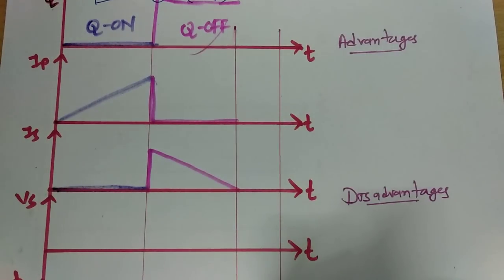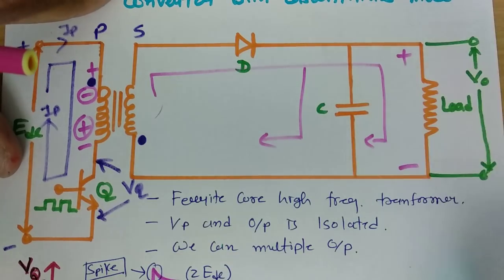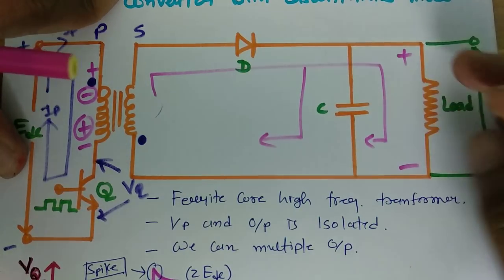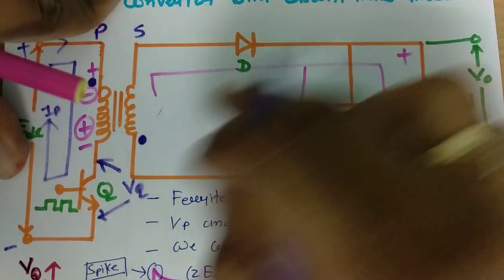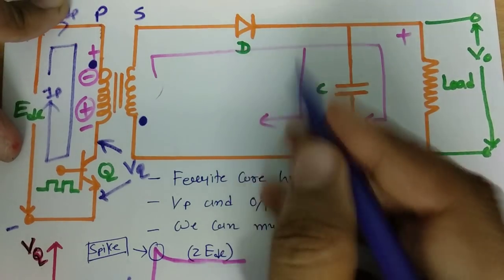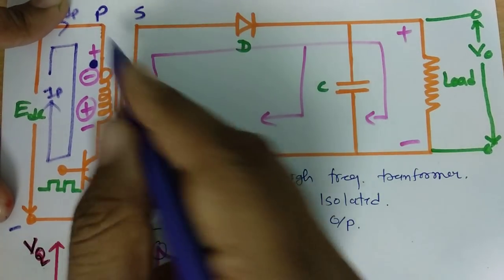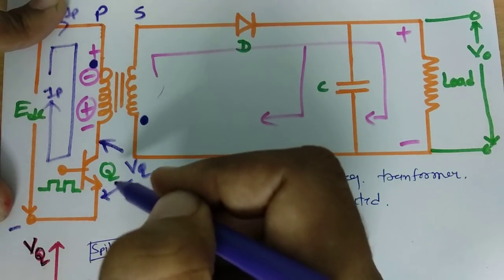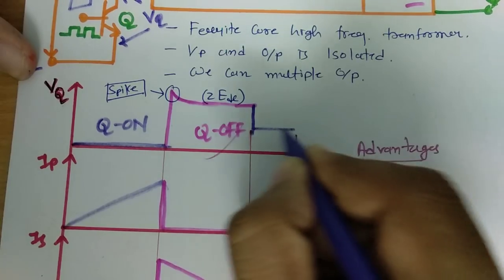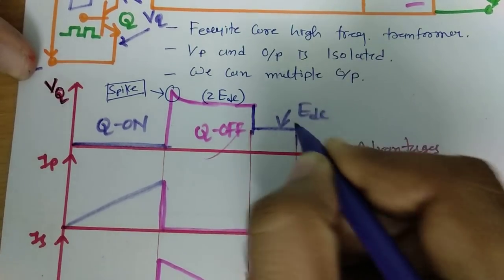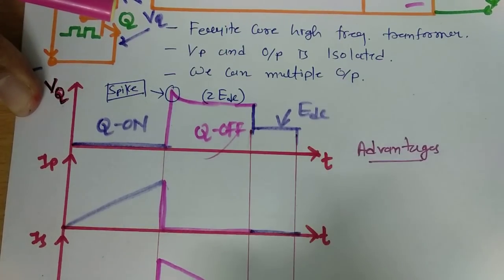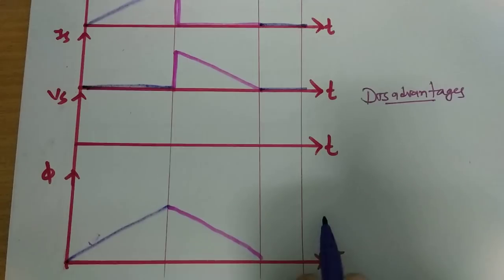Once secondary current gets to zero, there is no supply from secondary to load. The voltage across the capacitor which was appearing at the output side also gets to zero. When the secondary current is zero and the switch is still off, the voltage across switch VQ decreases to just EDC. This is the third mode — primary current is zero, secondary current is zero, and flux is zero.